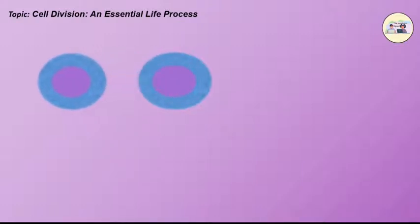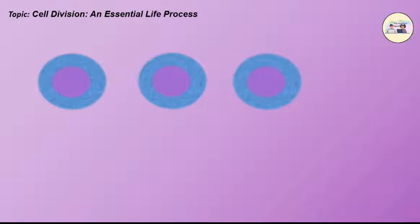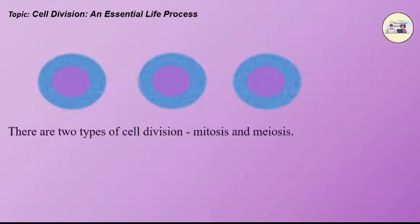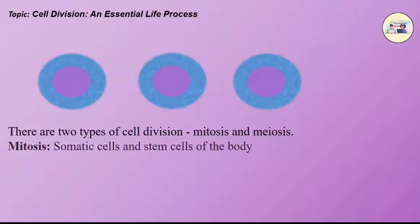Due to this property, a new organism is formed from the existing one, a multicellular organism grows up, and an emaciated body can be restored. There are two types of cell division: mitosis and meiosis. Mitosis occurs in the somatic cells and the stem cells of the body, whereas meiosis occurs in the germ cells.